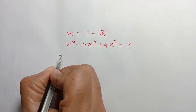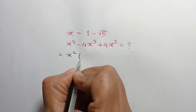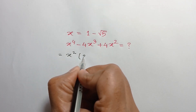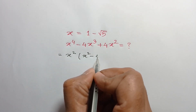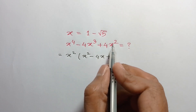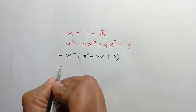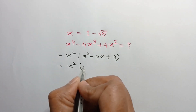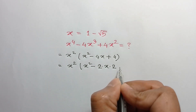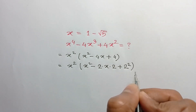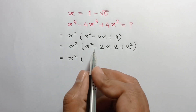Now taking common x squared from here, we can write x squared times x squared minus 4x plus 4. Taking common x squared from 4x cubed it will remain 4x, and taking common x squared from 4x squared it will remain 4. This is equal to x squared times x squared minus 4x plus 4.